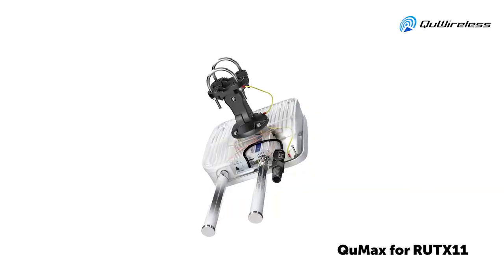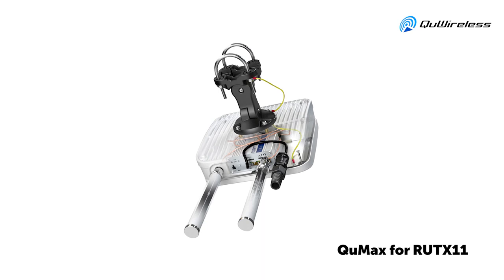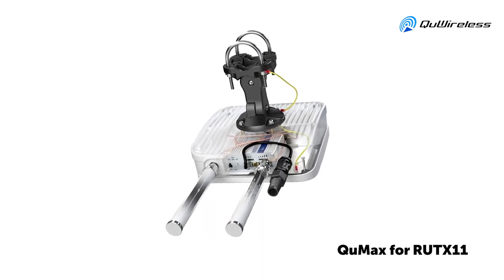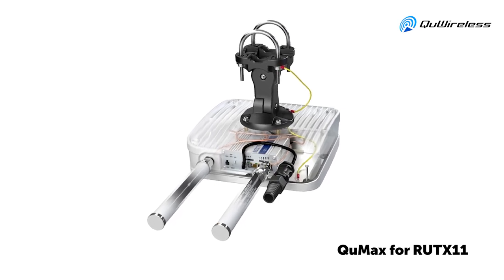QMAX for X11 is a directional or sector device. It consists of two 90 degree LTE antennas, two omnidirectional dual-band Wi-Fi antennas, and GPS and Bluetooth antennas.